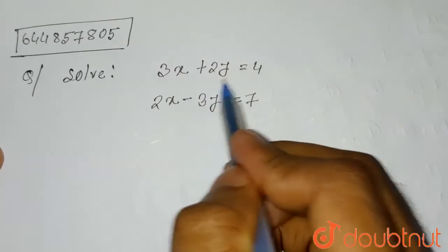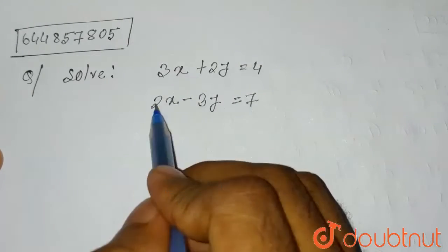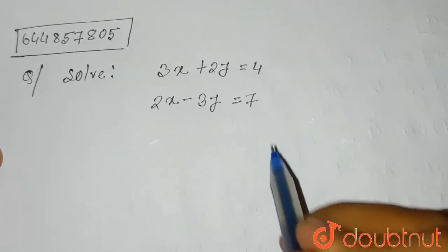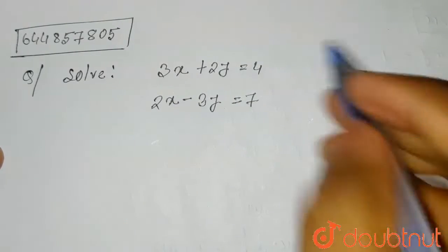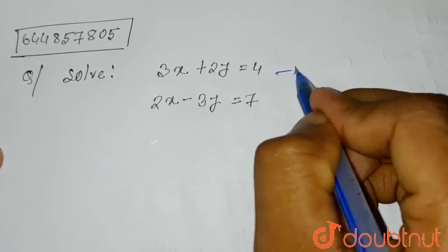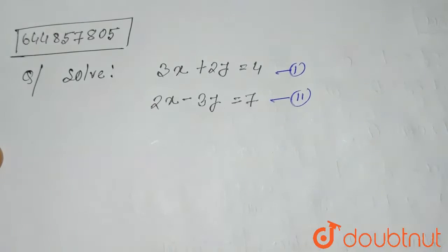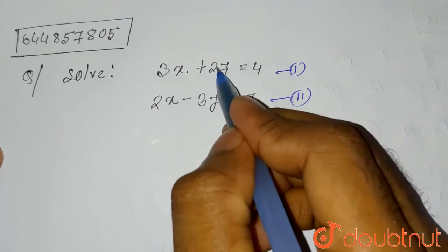Hello everyone. The question is: solve 3x + 2y = 4 and 2x - 3y = 7. So here we are given two equations. Let's say this is the first equation and this is the second equation.